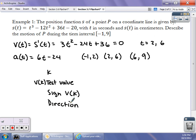So let's say on that first interval from negative 1 to 2, a good test value to use would be 0. If I plug 0 right here into my derivative, I get positive 36. So the sign of V of K is positive, so that's going to tell me that I'm moving to the right.